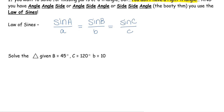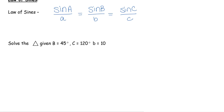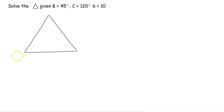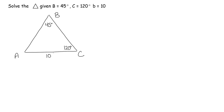We have one example today — we want to solve the triangle, which means finding all six pieces. We draw a generic triangle ABC and fill in our information. We're given angle B is 45 degrees, angle C is 120 degrees, and side b is 10. Capital letters represent angles and lowercase letters represent sides. This is an angle-angle-side situation.